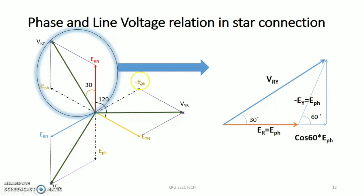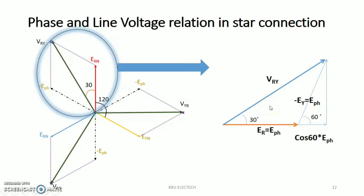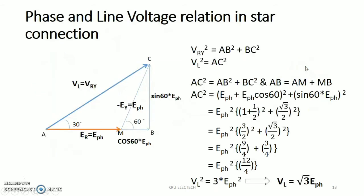This is the cos 60 E phase. How? Because this is the 60-degree angle and here is the 30-degree angle. This is the sine component and this is the cosine component of the phase voltage, and this is the resultant VRY. To calculate VRY you make the vector addition of ER and EY to get the result of VRY.